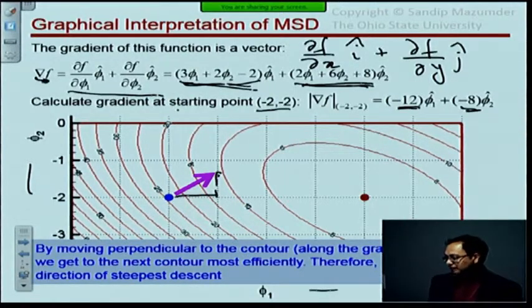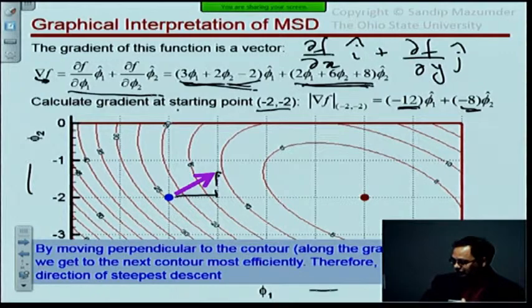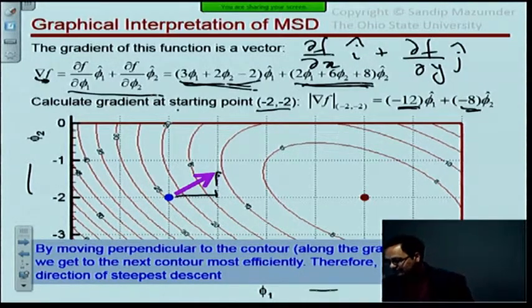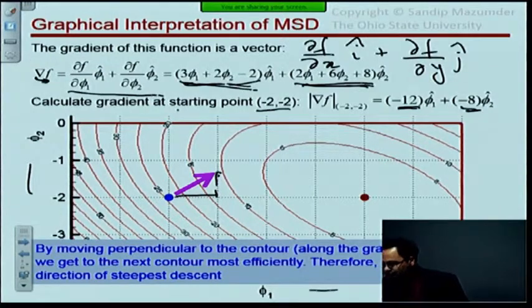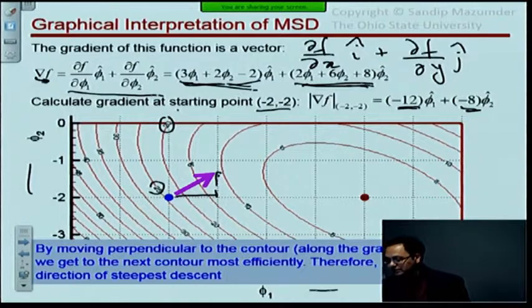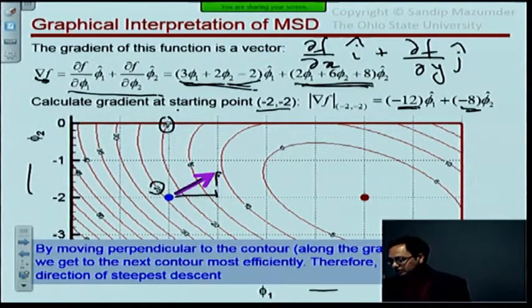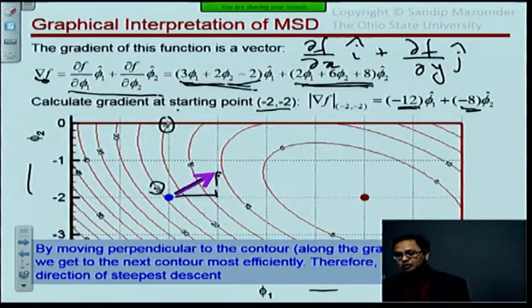Now, what happens is that you can see here that these are the contour lines. I have one at 25 here and what I have one at 20 here. Now it so happens that if you travel along this path right here, you reach the next contour, the next isocontour, fastest. That's the easiest path to get to the next contour. If you take any other path you will reach the next contour later.